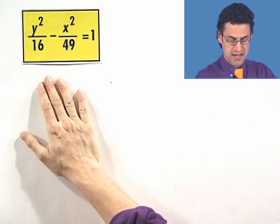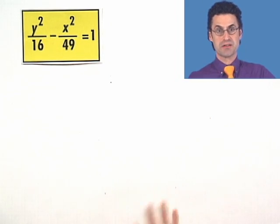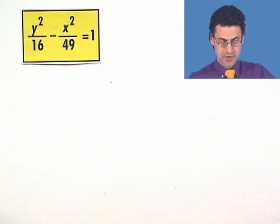All right, let's take a look at some hyperbola and see if we can actually produce the graph. Let's start with this one, y squared over 16 minus x squared over 49 equals 1. Let me just share with you exactly how I think about this so there's no funny business.